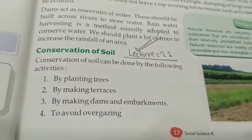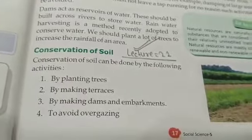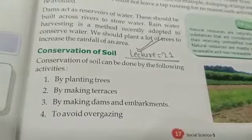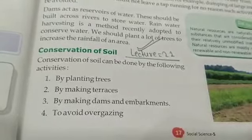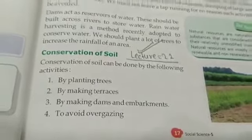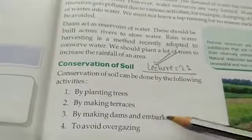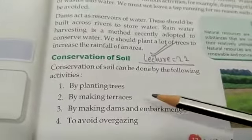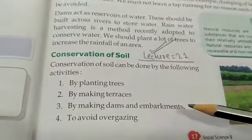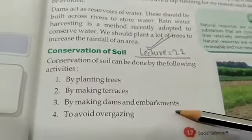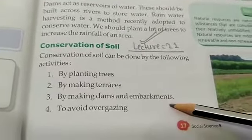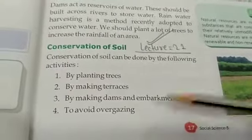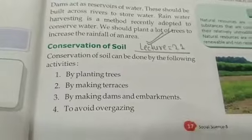How do we do conservation of soil? Conservation of soil can be done by the following activities: by planting trees, by making terraces, by making dams, and to avoid overgrazing.